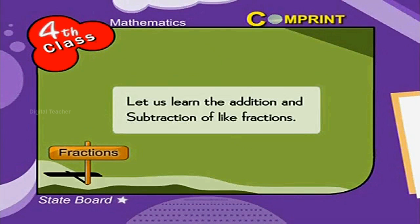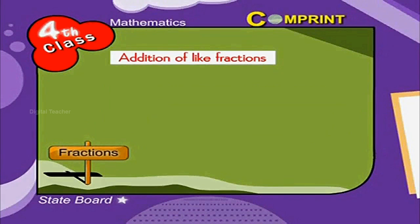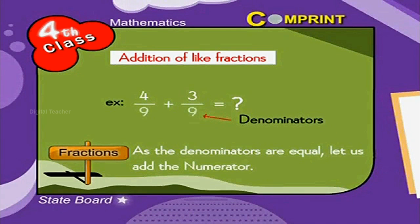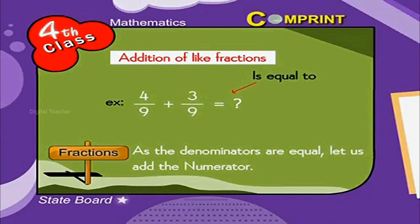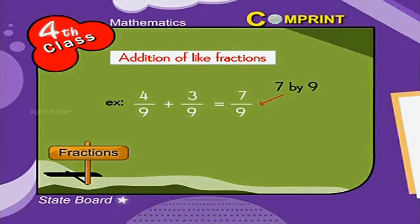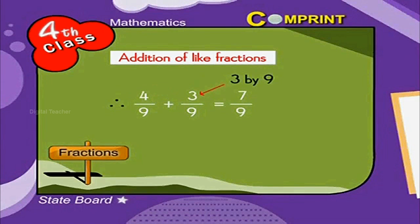Let us learn the addition and subtraction of like fractions. Addition of like fractions — here is an example: 4 by 9 plus 3 by 9 is equal to how much? These are like fractions because they have the same denominators. As the denominators are equal, we add the numerators: 4 plus 3 is equal to 7. The common denominator remains 9. Therefore, 4 by 9 plus 3 by 9 is equal to 7 by 9.